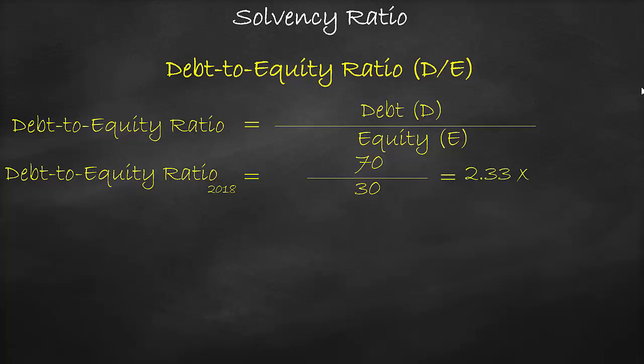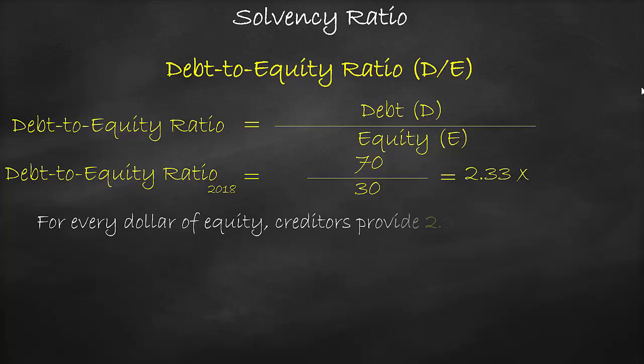The unit of the debt-to-equity ratio is times, and this means that for every dollar of equity, creditors provide $2.33 of debt.